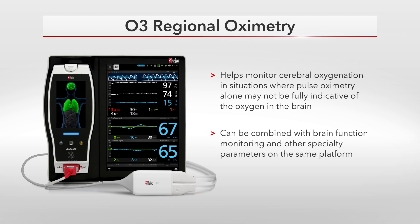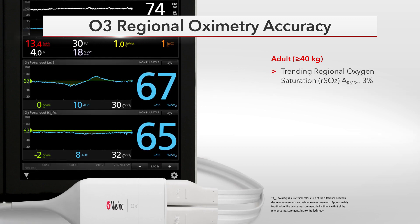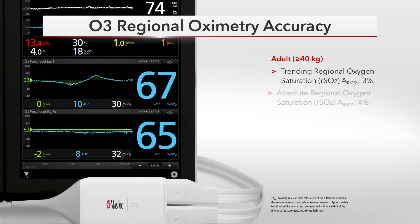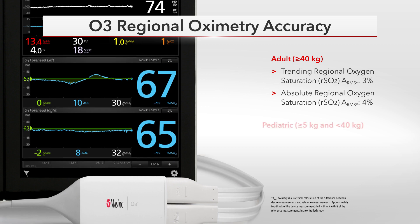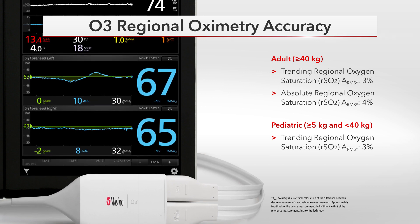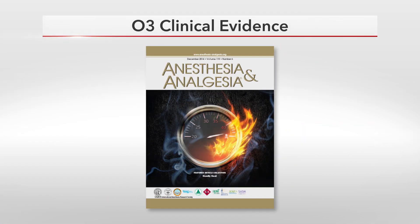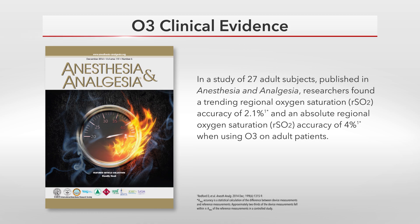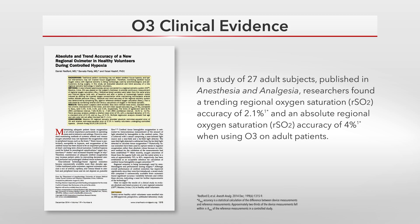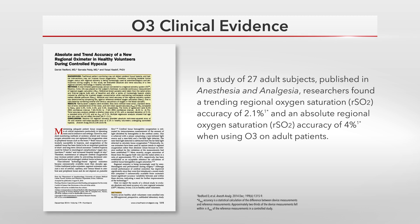O3 can be combined with SED-Line Brain Function Monitoring and Advanced Rainbow Parameters on the same platform. Specifications for the O3 Adult Sensor include a trending regional oxygen saturation accuracy of 3% and an absolute regional oxygen saturation accuracy of 4%. Specifications for the O3 Pediatric Sensor include a trending accuracy of 3% and an absolute accuracy of 5%. In a study of 27 adult subjects published in Anesthesia and Analgesia, researchers found a trending RSO2 accuracy of 2.1% and an absolute RSO2 accuracy of 4% when using O3 on adult patients.